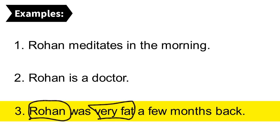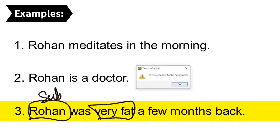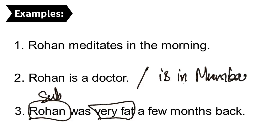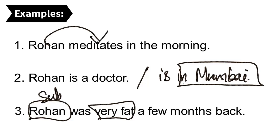Third example: 'Rohan was very fat a few months back.' The subject is Rohan, and here Rohan is being described — this is how Rohan was in the past. The subject doesn't always perform an action; it can be renamed or described. It can be renamed with a noun, noun phrase, or noun clause, or it can be described using an adjective, adjective phrase, or prepositional phrase. For example, 'Rohan is in Mumbai' — 'in Mumbai' is a prepositional phrase giving information about the subject Rohan.